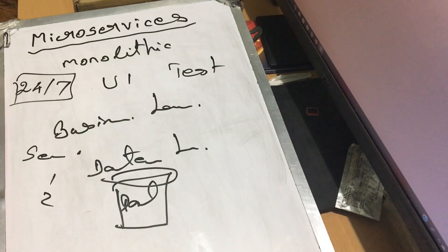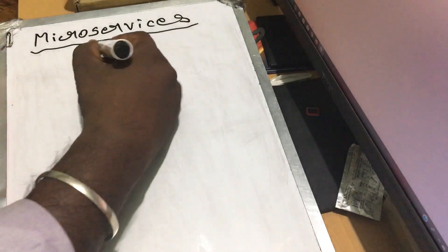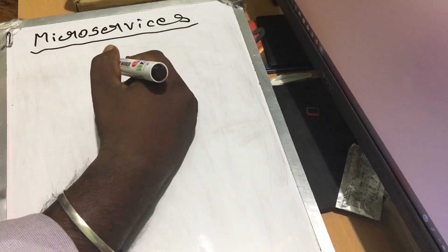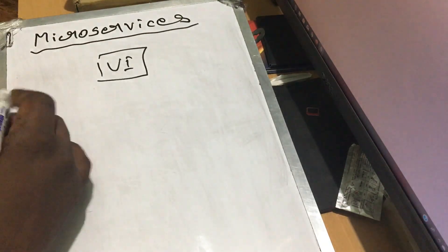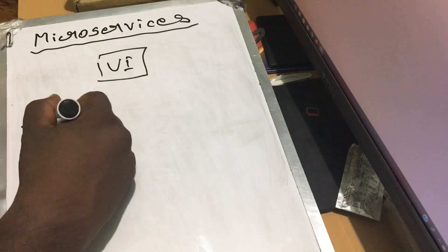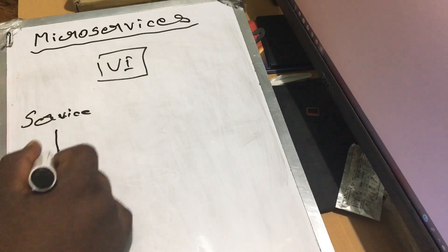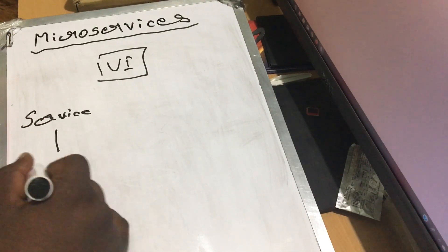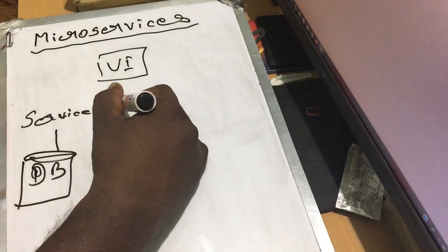So let's see what we need to do with microservices. In microservices, there is a UI port — we can develop a UI port. For example, LMS can be one service, and each service has its own REST service with its own database.